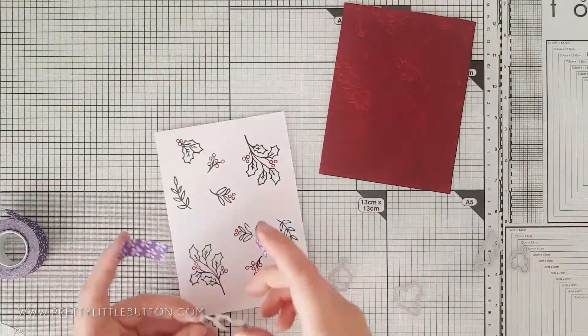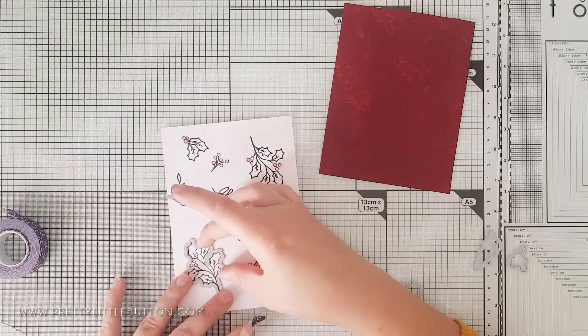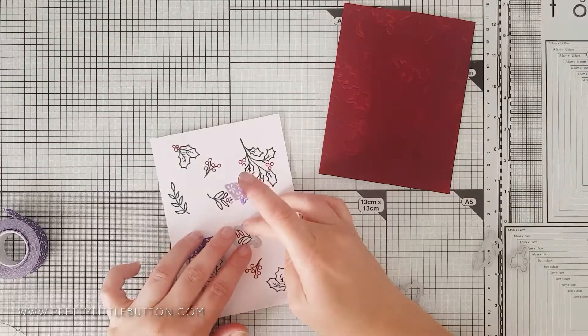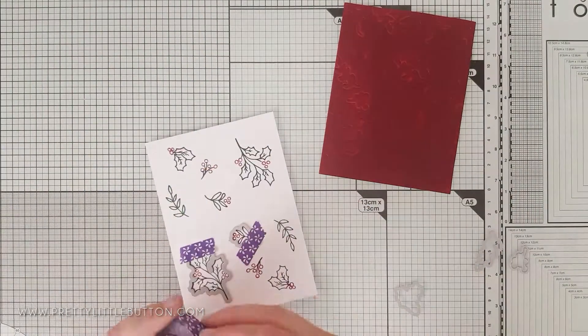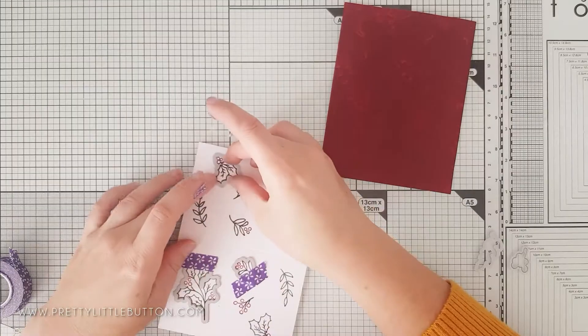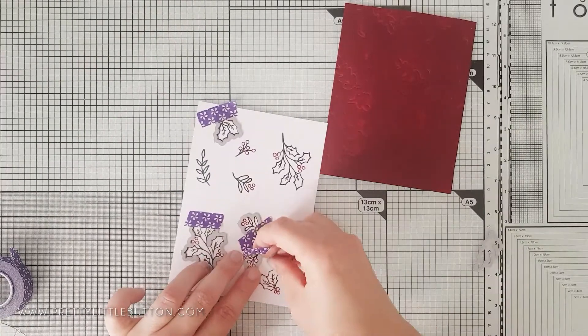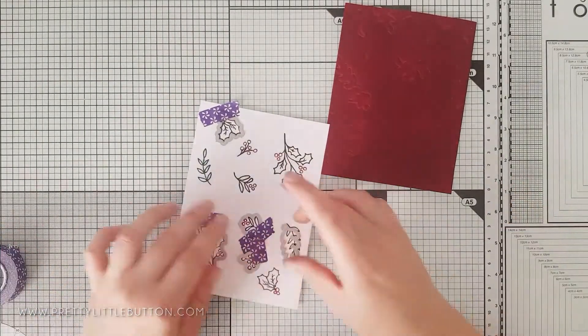Again, just using a wet wipe to remove the green ink from those berries. Once I'm happy, I can then close my Misti door and stamp it down. This means I've now got some red berries with some green foliage. I rotated my card and stamped those leaves and foliage again so I had two lots of each stamp. Once I'd done that, I then added the coordinating dies over the top, keeping them in place with some purple tape, and then I ran that through my die-cut machine.